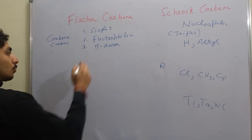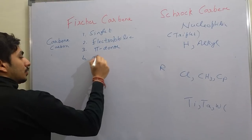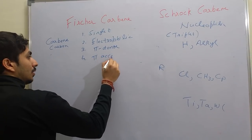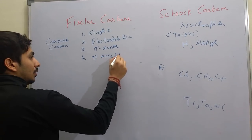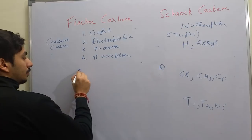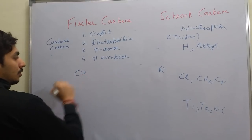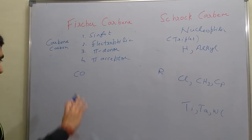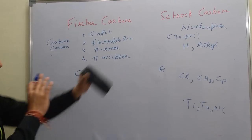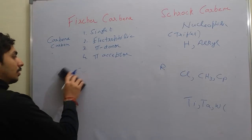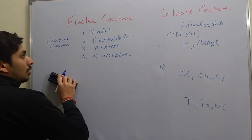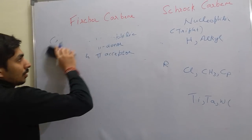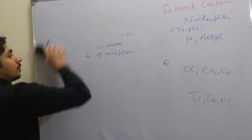The fourth point is that the ligand attached to the metal should be a pi-acceptor ligand like CO (carbon monoxide). I will discuss this in more detail later. Now let's move on to Schrock Carbenes.